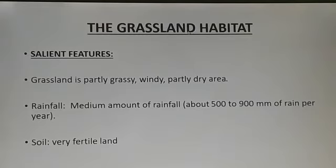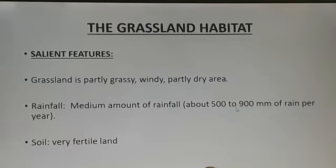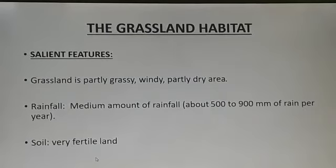Now what makes a habitat a grassland? We will discuss the salient features. Grassland is a partly grassy, windy and dry area. It receives a medium amount of rainfall — 500 to 900 mm — so that it is very fertile land.